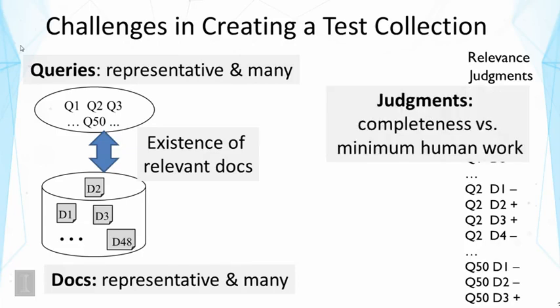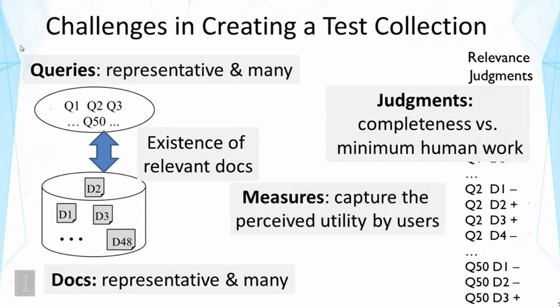In terms of relevance judgments, the challenge is to ensure complete judgments of all the documents for all the queries, while minimizing human effort. We have to use human labor to label these documents — it's very labor intensive. As a result, it's impossible to actually label all the documents for all the queries, especially considering a giant dataset like the web. For measures, it's also challenging because we want measures that accurately reflect the perceived utility of users. If your measure is not measuring the right thing, then your conclusions would be misled.